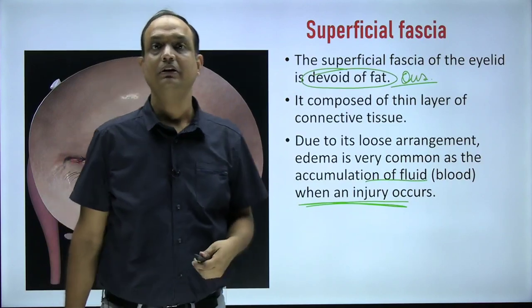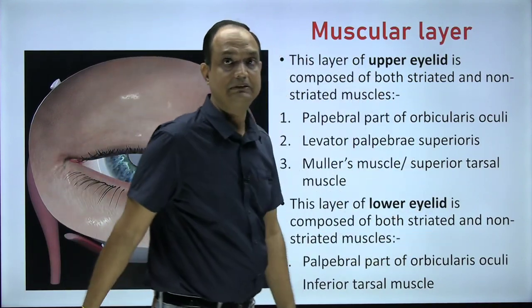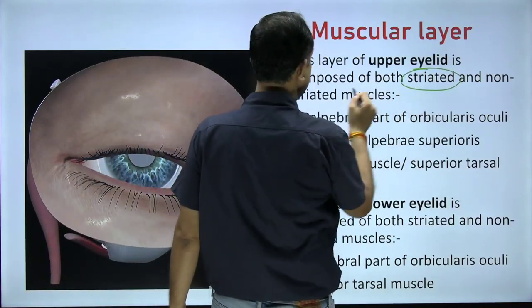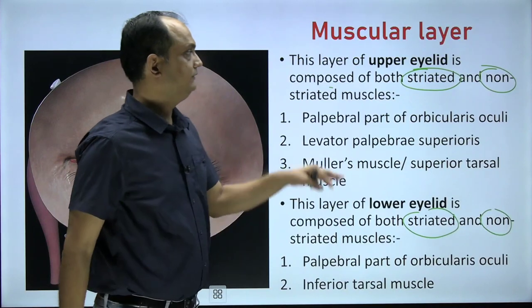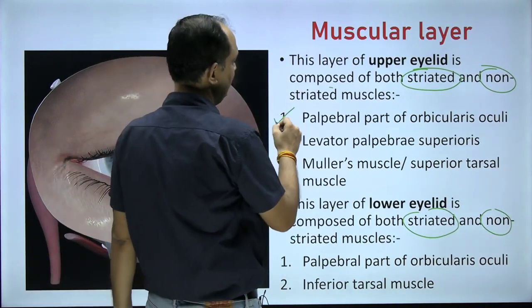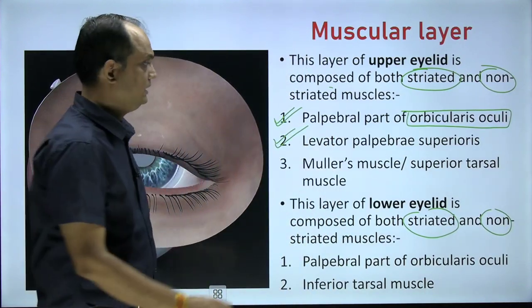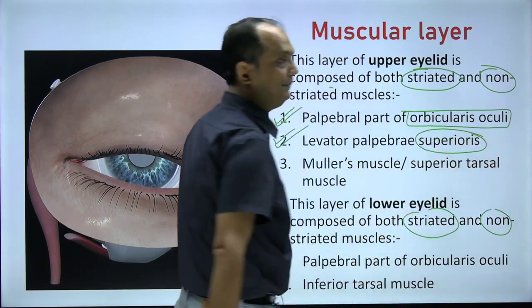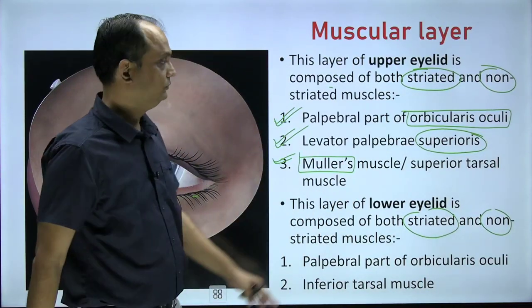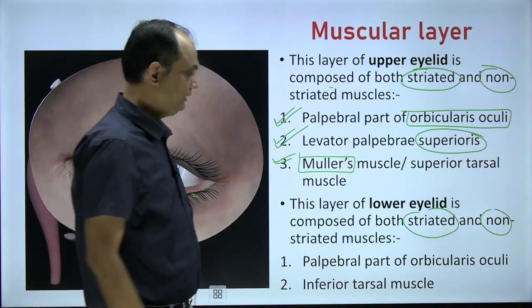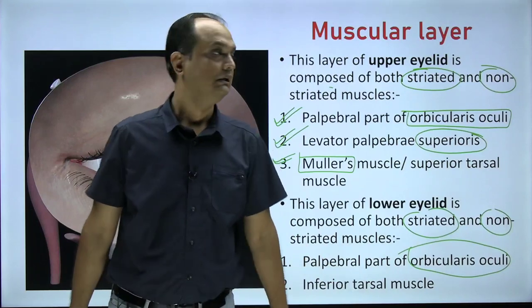Now the muscular layer. Both the upper and lower eyelids have striated and non-striated muscles. In the upper eyelid the striated muscles are the palpebral part of orbicularis oculi and levator palpebrae superioris. Levator palpebrae superioris is a muscle of the upper eyelid only, not the lower. There is also a smooth muscle portion known as Müller's muscle, also called the superior tarsal muscle. The lower eyelid has the palpebral part of orbicularis oculi and the inferior tarsal muscle.